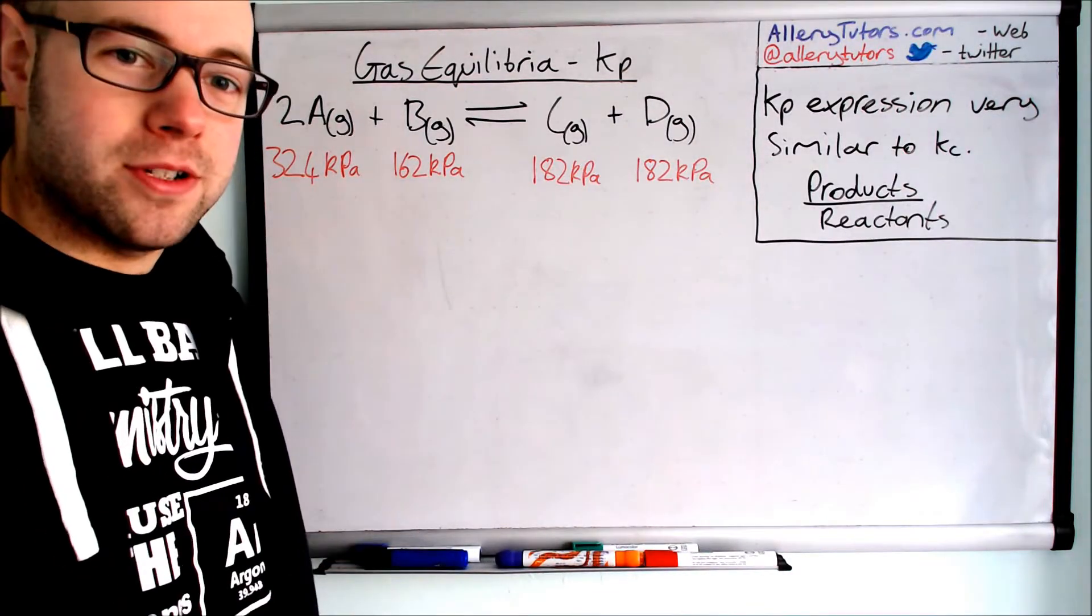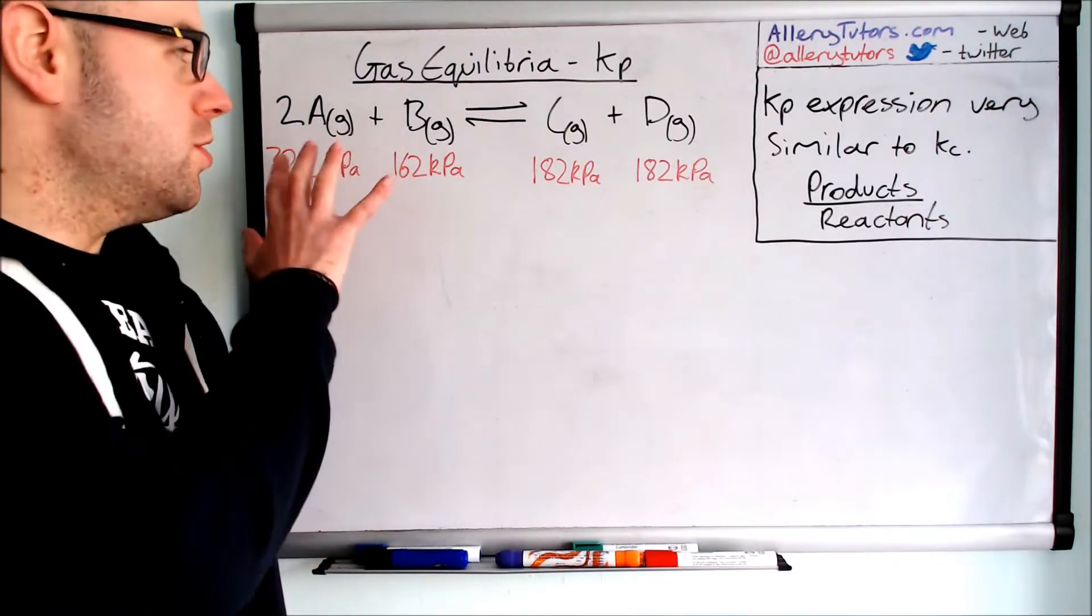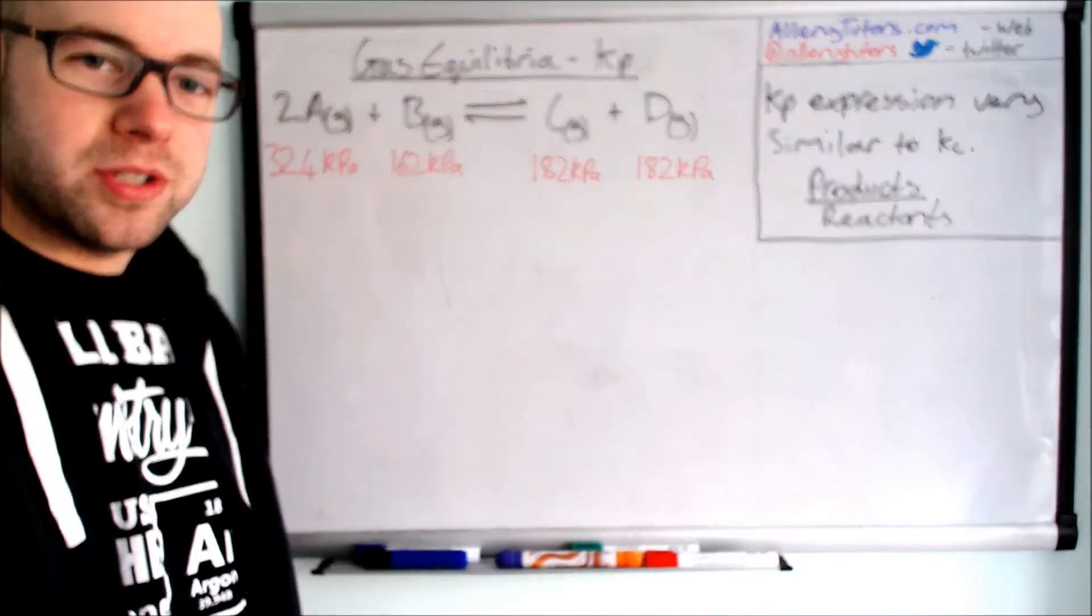So we're going to show you how to do both of them in this video and I've got this generic example here. So I've got two lots of A which is a gas, reacting with B which is a gas and that will produce C plus D.